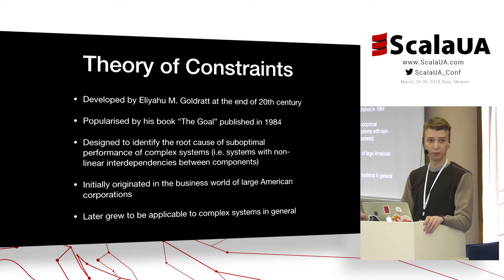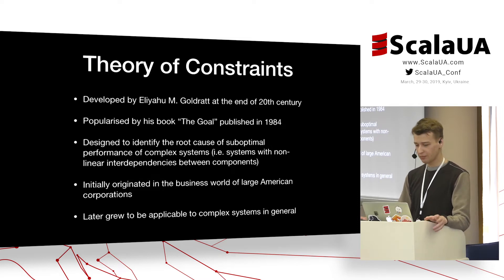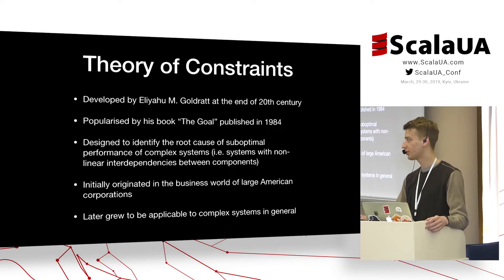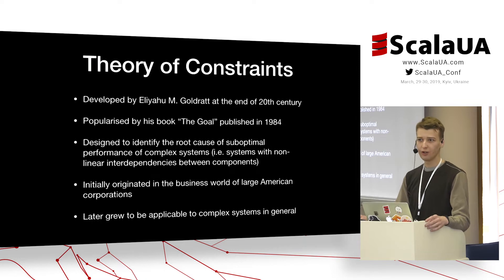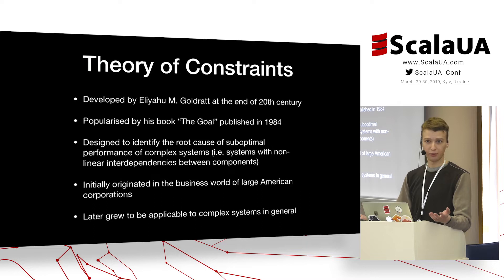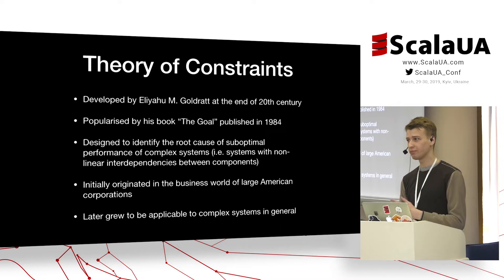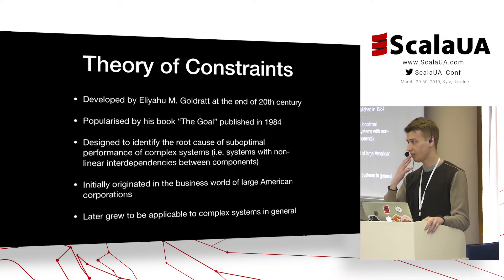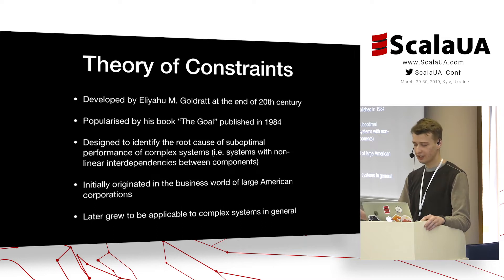This theory was popularized in his book called The Goal, published in 1984. The main purpose of this theory of constraints was to identify the root cause of problems that appear on this kind of project — precisely, problems like malfunctioning or failure to deliver production at the specified rate.